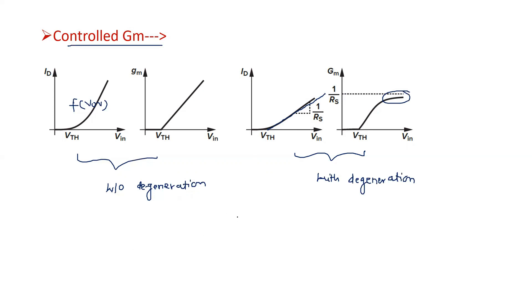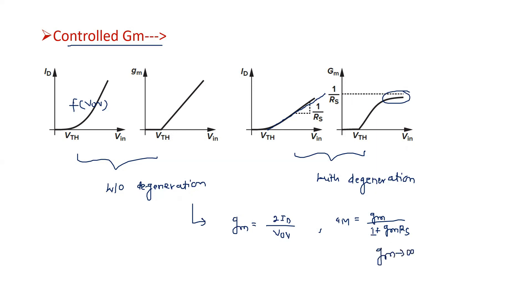From the expression GM equals 2·ID divided by overdrive voltage, we see that after degeneration the effective GM becomes GM divided by (1 plus GM·RS). When GM approaches a very large value, this effective GM approaches 1/RS. So we are controlling transconductance by applying source degeneration, and also making the current a linear function of input voltage. These are the two advantages of source degeneration.